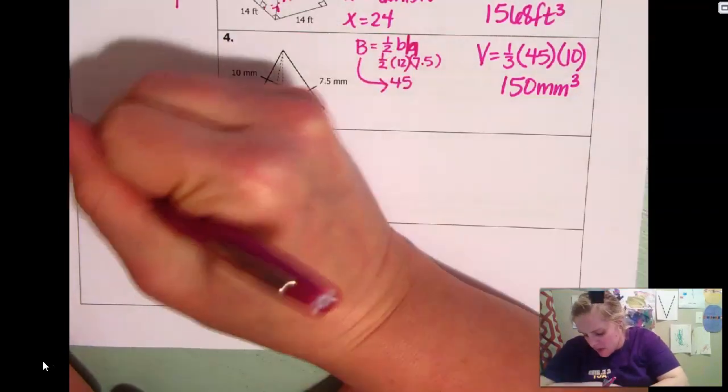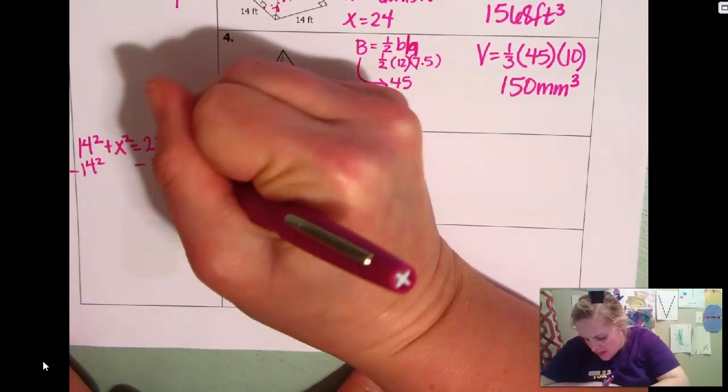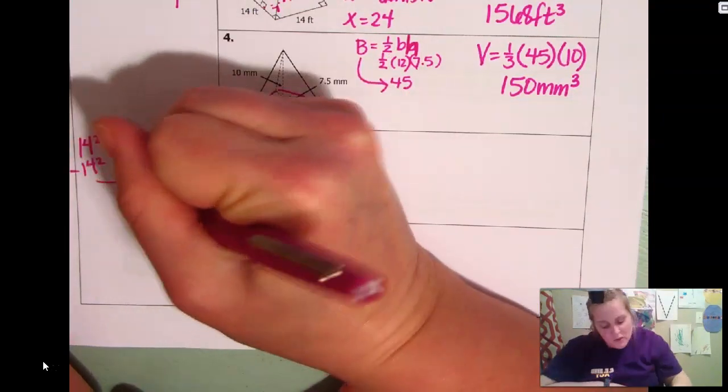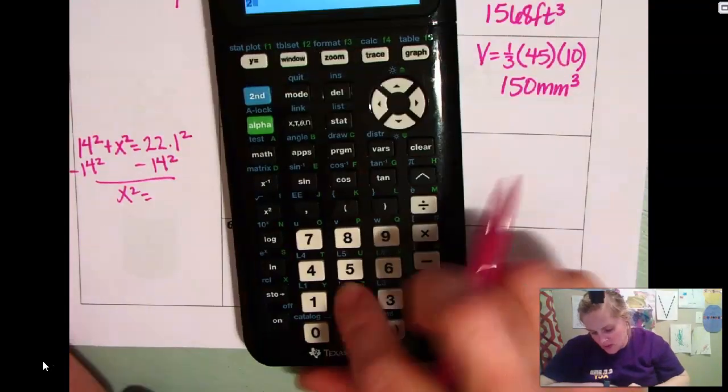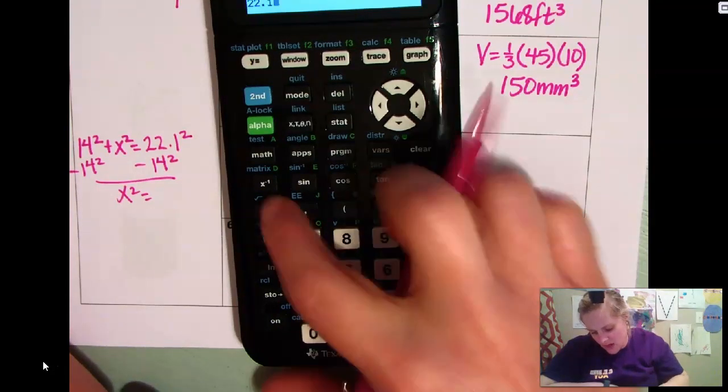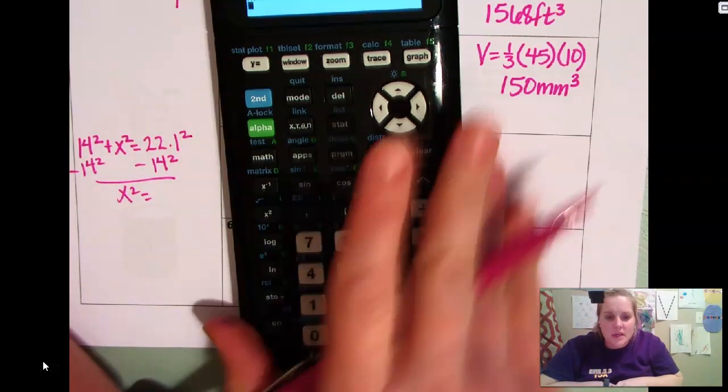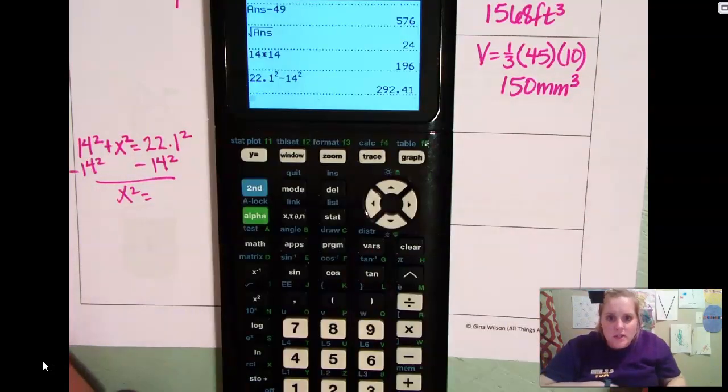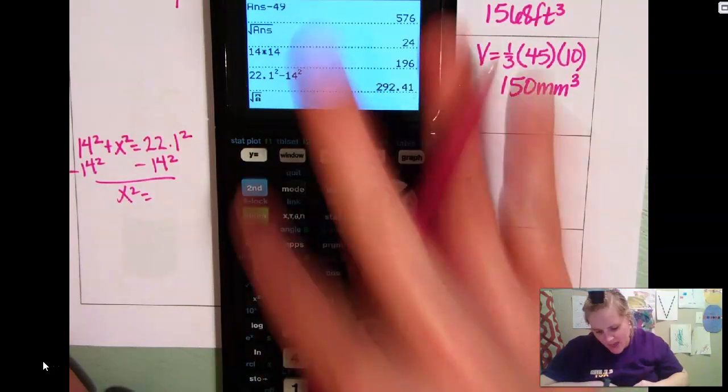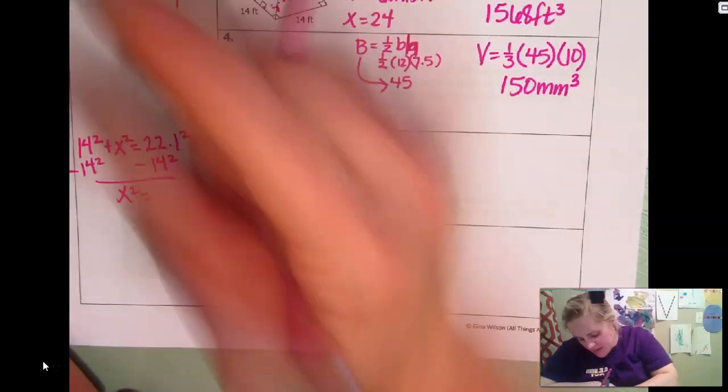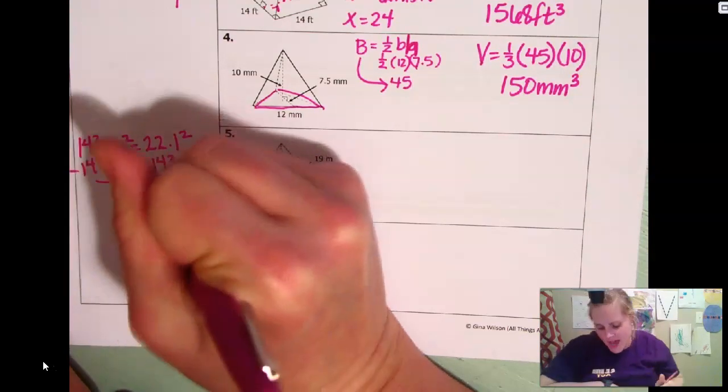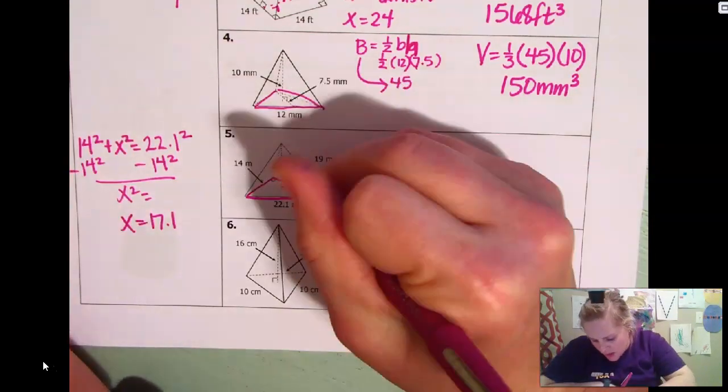14 squared plus X squared equals the hypotenuse, which is 22.1 squared. I'm going to subtract 14 squared. X squared equals 22.1 squared minus 14 squared is, whoops, you can't see that. Sorry, y'all. 292.41. Then we take the square root of that. So X is going to be 17.1. That is going to be the other leg.